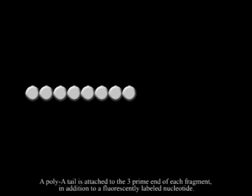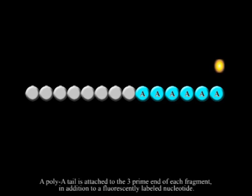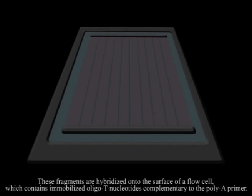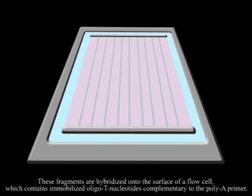A poly-A tail is attached to the 3 prime end of each fragment, in addition to a fluorescently labeled nucleotide. These fragments are hybridized onto the surface of a flow cell, which contains immobilized oligonucleotides complementary to the poly-A primer.